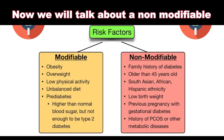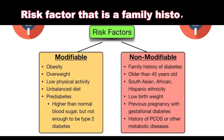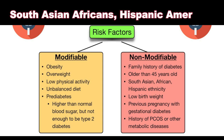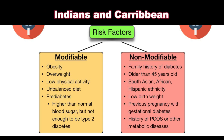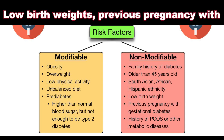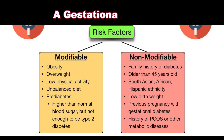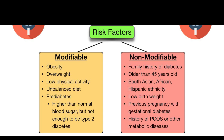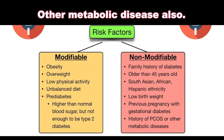Non-modifiable risk factors include family history of diabetes, being older than 45 years, and ethnicity — specifically South Asian, African, Hispanic, American Indian, and Caribbean backgrounds. Additional factors include low birth weight, previous pregnancy with gestational diabetes, and history of polycystic ovary syndrome or other metabolic diseases.